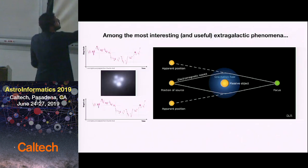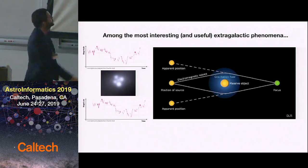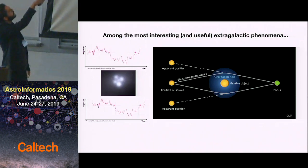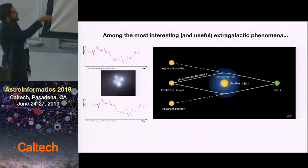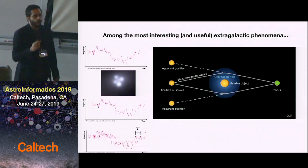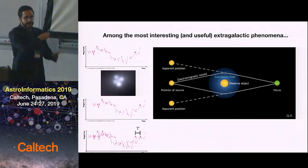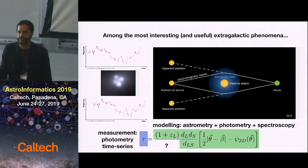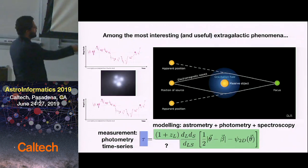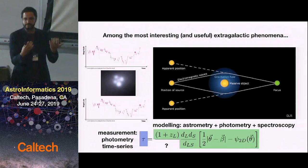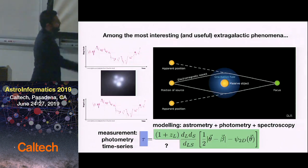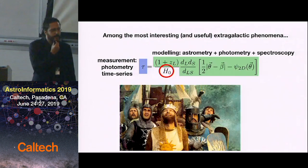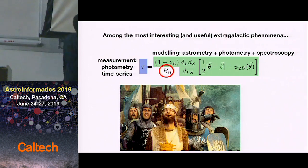When there is a variation in the light of one image, there will be a certain time before the other images suffer the same variation. These plots show two light curves — magnitude versus time — for two different images. If you can measure those light curves and the time delay, then if you believe in general relativity and do a little modeling of your lens system, you can infer the value of the Hubble constant.